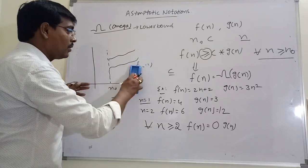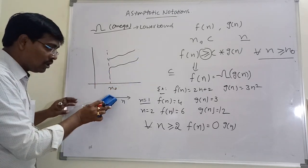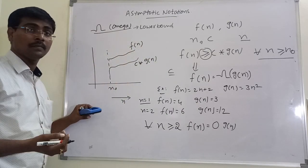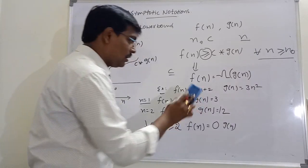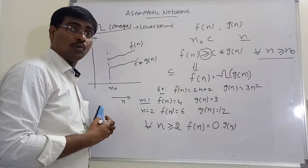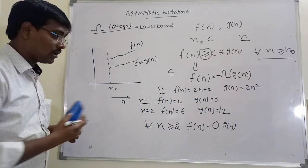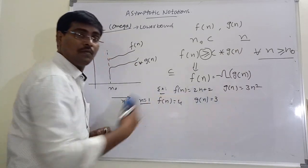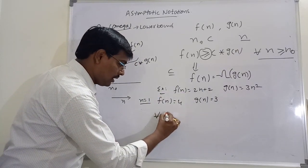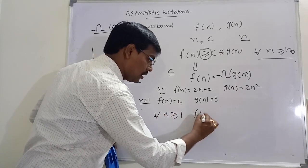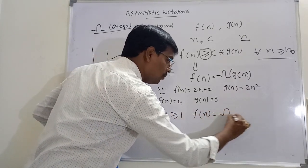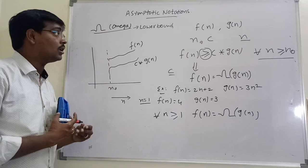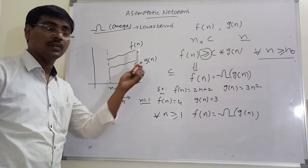In pictorial form, for some value of n0, the f(n) value is greater than c into g(n). For example, suppose f(n) = 2n + 2 and g(n) = 3n squared. For n = 1, f(n) value is greater than g(n). That means for all n greater than or equal to 1, f(n) = Omega(g(n)). This is Omega notation.